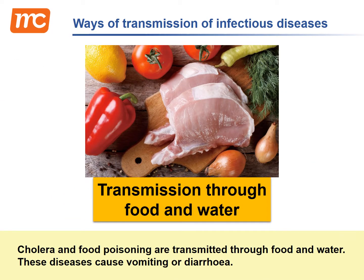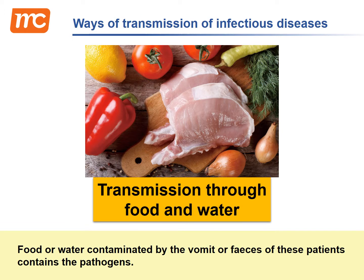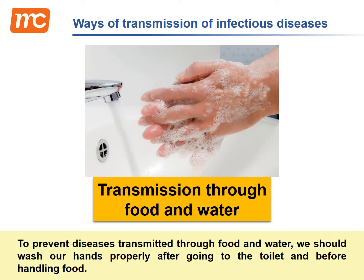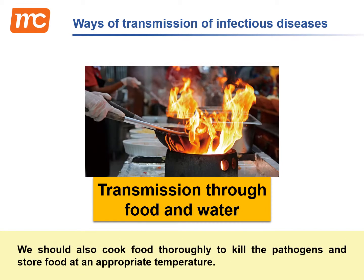Cholera and food poisoning are transmitted through food and water. These diseases cause vomiting or diarrhea, and food or water contaminated by the vomit or feces of these patients contains the pathogens. To prevent such diseases, we should wash our hands properly after going to the toilet and before handling food, cook food thoroughly to kill pathogens, and store food at an appropriate temperature.